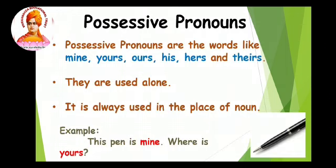Now we are going to see the possessive pronouns. You already know what a pronoun is. When we want to replace the noun, we can use the pronoun instead of the noun — this is called a pronoun. Possessive pronouns are words like mine, yours, his, hers, and theirs. They are used alone, because possessive adjectives come before a noun, but possessive pronouns can be used alone. They are always used in the place of a noun, because they act as a noun. For example, this pen is mine. Where is yours? Here 'mine' and 'yours' are the possessive pronouns.